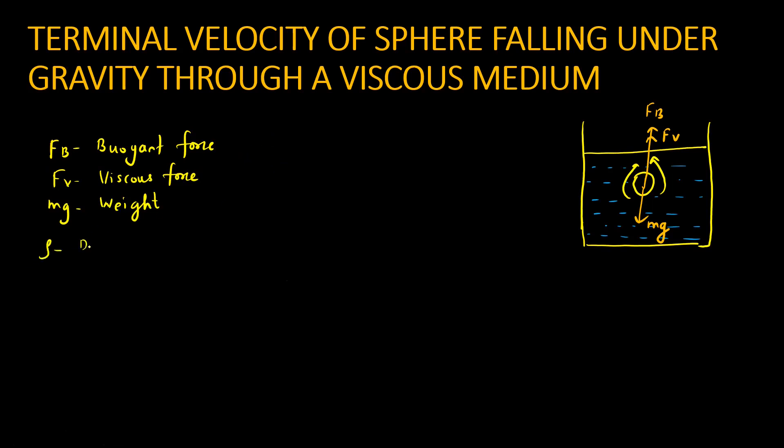Rho means density of my body, which is my sphere. Sigma means density of fluid. Eta is coefficient of viscosity.